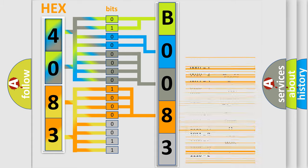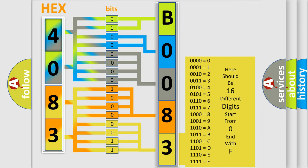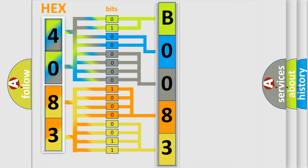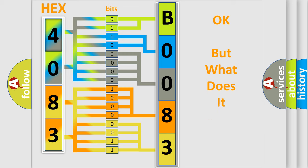A single byte conceals 256 possible combinations. We now know in what way the diagnostic tool translates the received information into a more comprehensible format. The number itself does not make sense to us if we cannot assign information about what it actually expresses.